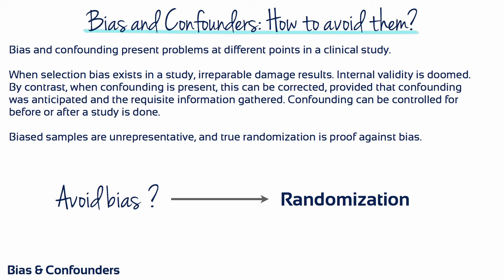Bias and confounding present problems at different points in a clinical study. When selection bias, for example, exists in a study, irreparable damage results and external validity is doomed. By contrast, when confounding is present, this can be corrected, provided that confounding was anticipated and the requisite information gathered.